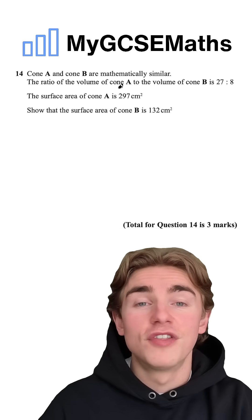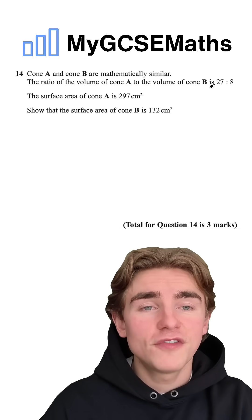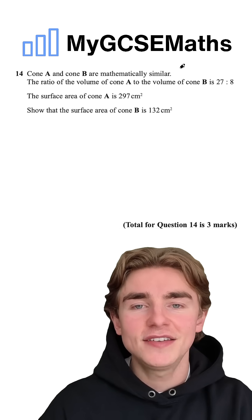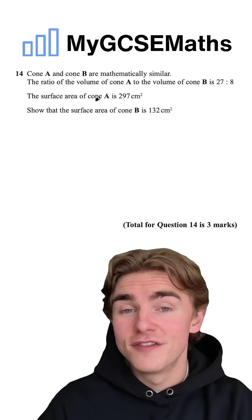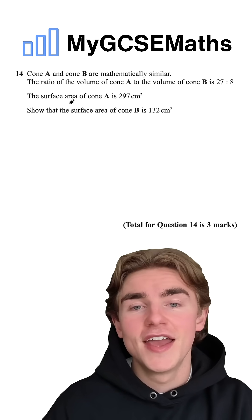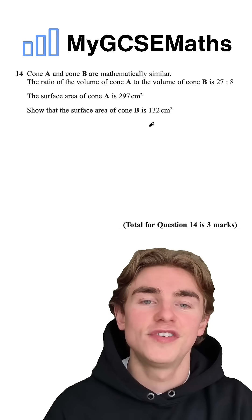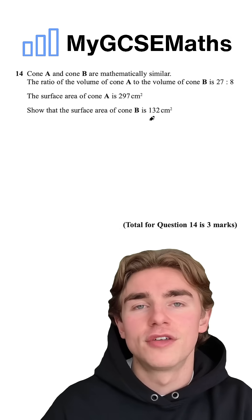Next up, it says that the ratio of the volume of cone A to the volume of cone B is 27 to 8. We're then told that the surface area of cone A is 297 and we're asked to show that the surface area of cone B is 132.